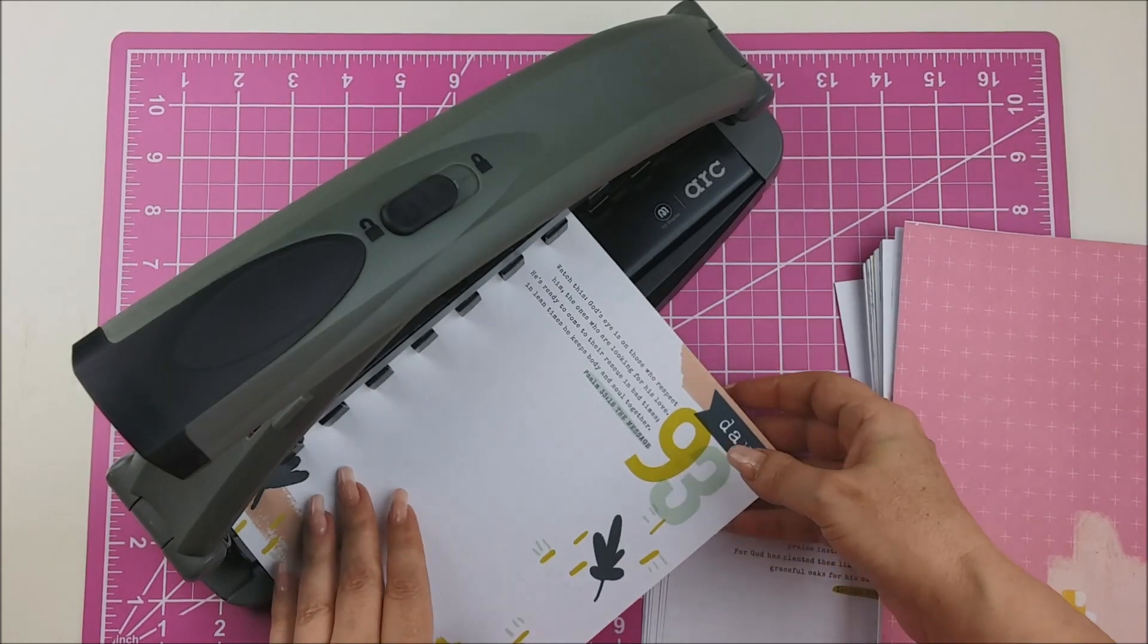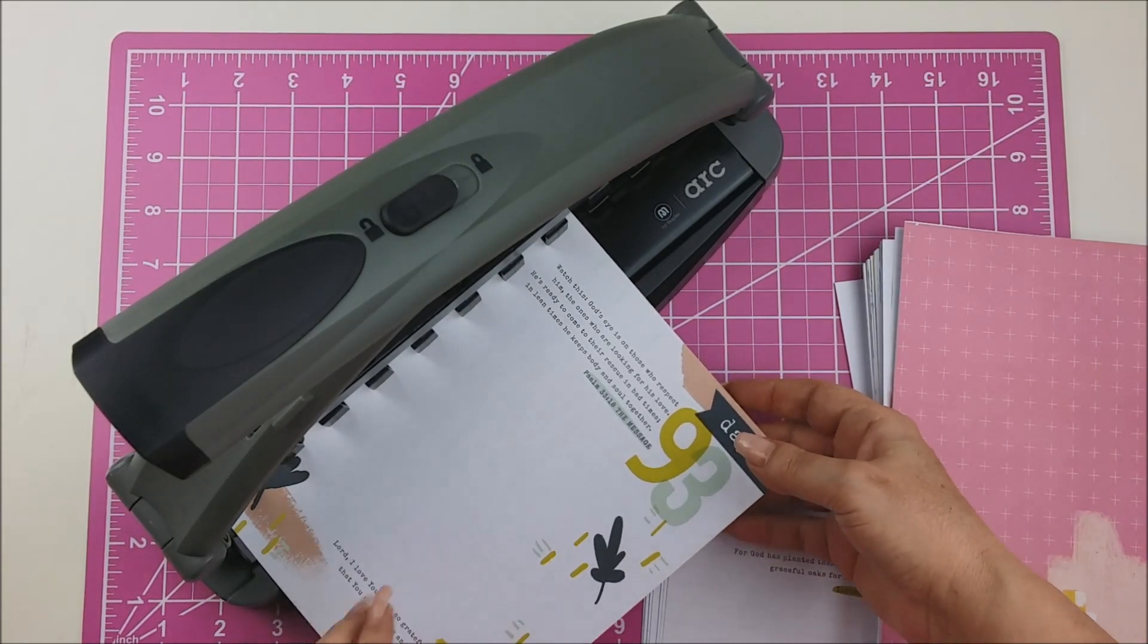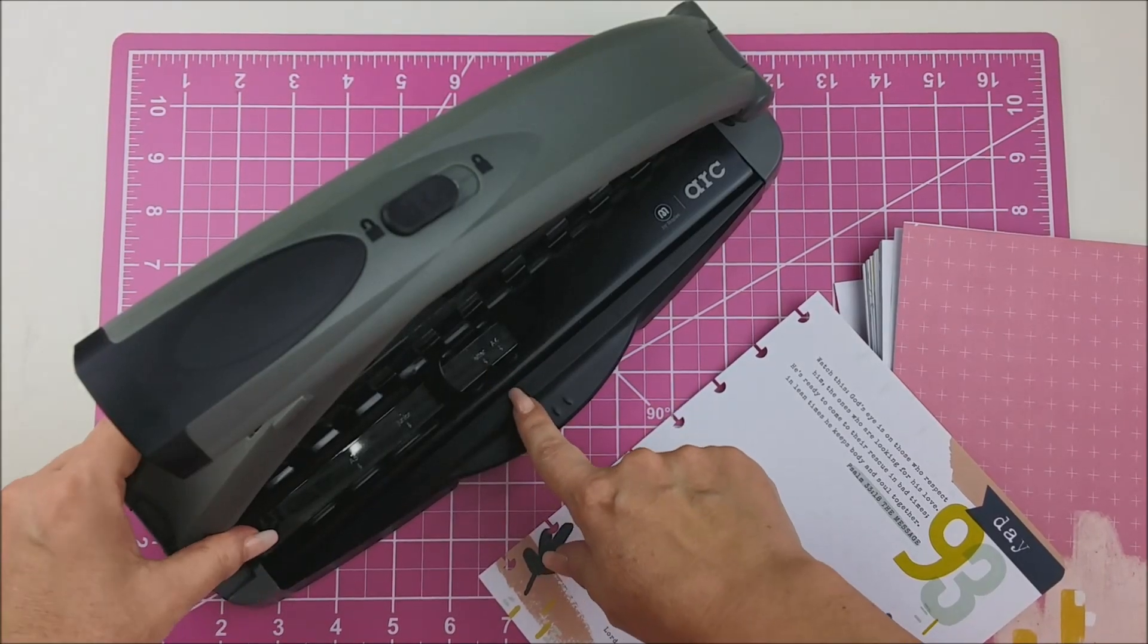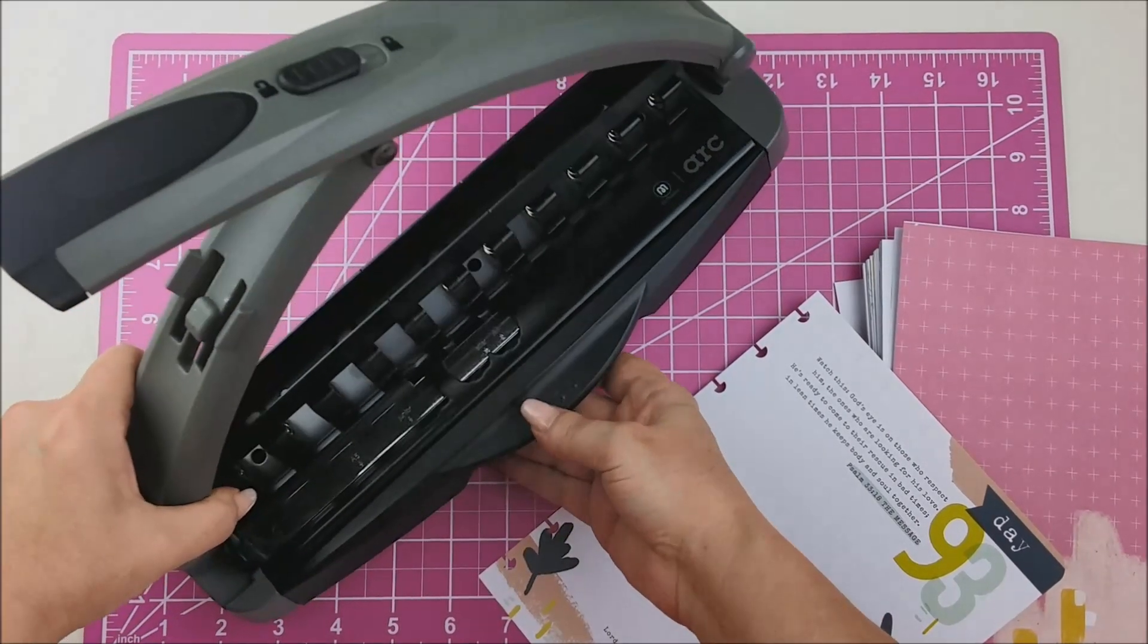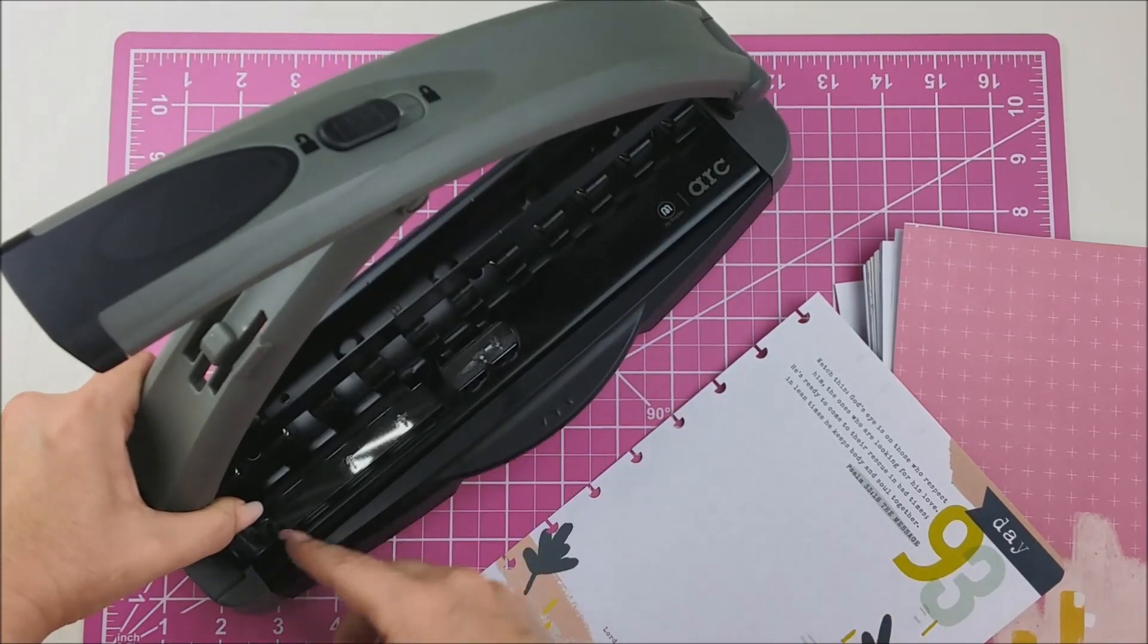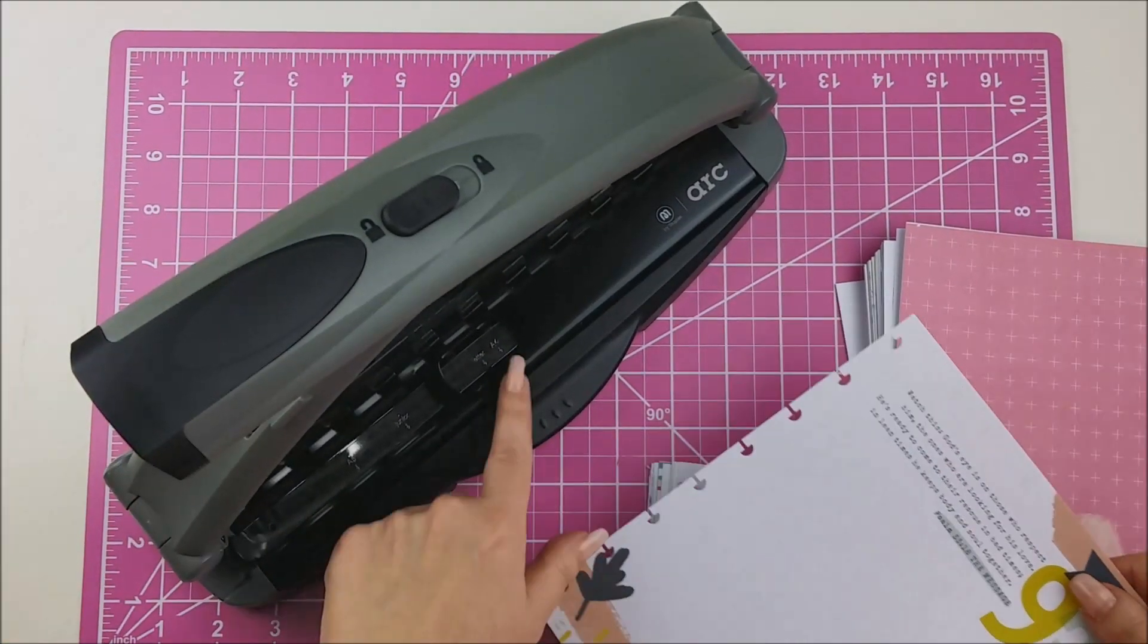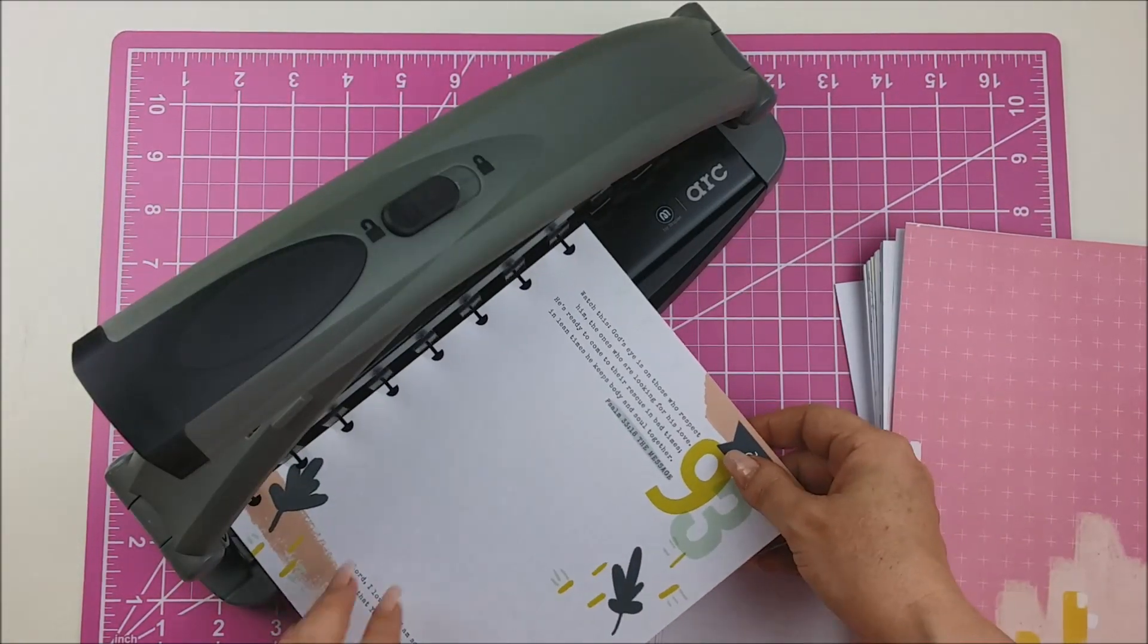And I wanted to line this up to see where my holes are going to punch. And it's already set at letter. I don't know if you can see these. It's set here at letter size and this is adjustable right here. And that's what I use for the happy planners. And actually, this fits perfectly.